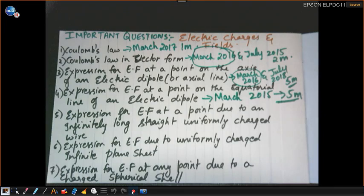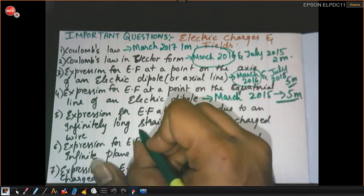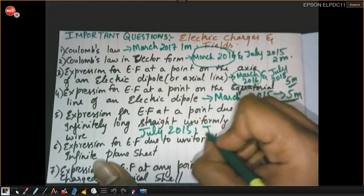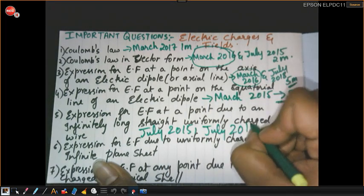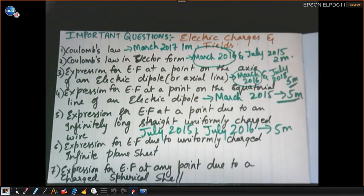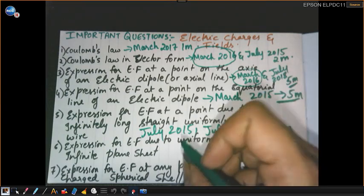The next question is the expression for electric field at a point due to an infinitely long straight uniformly charged wire — very very important. This question appeared in July 2015 and July 2016 for five marks, meaning in both supplementary exams of 2015 and 2016 this question came.